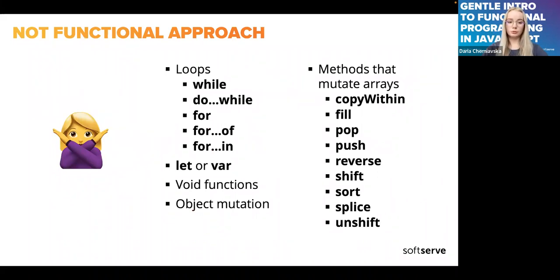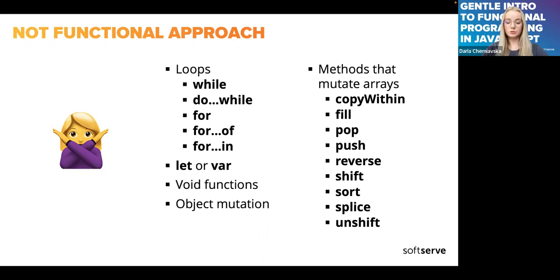Now let's mention the non-functional approaches. If you're using loops, they're not functional — you should use higher-order functions like map or recursion instead. You should use only const, not let or var. Void functions are considered functions with side effects: if a function does something but returns nothing, it's not functional. You should not mutate objects — return a copy instead. Also be aware of array methods that mutate: sort, for example, modifies the existing array in place rather than returning a new one, which surprised me when I first learned it.